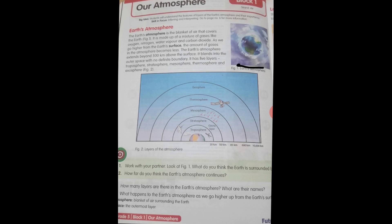The Earth's atmosphere extends beyond 500 km above the surface. It blends into outer space with no definite boundary. It has 5 layers: troposphere, stratosphere, mesosphere, thermosphere and exosphere. See figure number 2 — we have 5 layers of atmosphere.